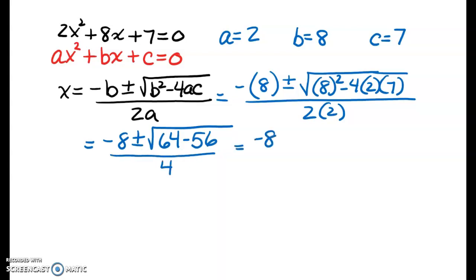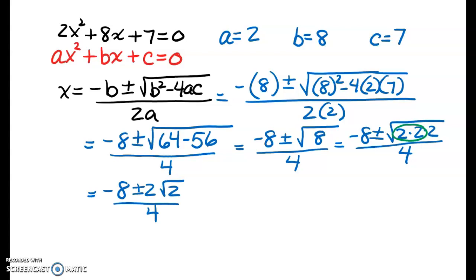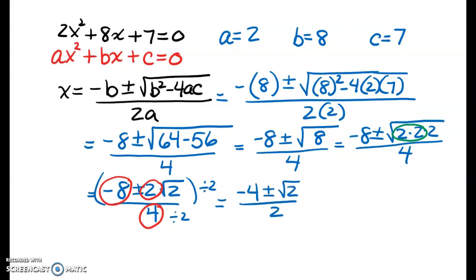64 minus 56 is 8, all over 4. Now, 8 factors into 2 times 4, and 4 is 2 times 2. I have a nice group of 2s I can take out, so I get negative 8 plus or minus 2 square root of 2 over 4. All my numbers are divisible by 2, so taking out a 2 from each gives me negative 4 plus or minus the square root of 2 over 2.